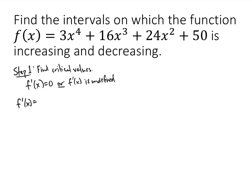Our function is 3x to the 4th plus 16x cubed plus 24x squared plus 50. We use our derivative rules to find the derivative, which is going to be 3 times 4x cubed plus 16 times 3x squared plus 24 times 2x, and the derivative of 50 is 0. When we simplify, we get 12x cubed plus 48x squared plus 48x.